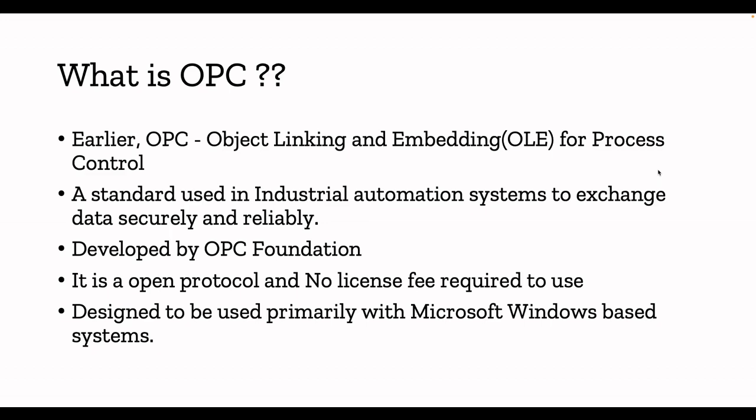Before we talk about OPC UA, we need to understand the history — where this term is coined from. What is OPC? Basically, OPC stands for Object Linking and Embedding for Process Control. All these industrial leaders joined the organization, formed a foundation, and were working to build an interoperable protocol in order to exchange data securely and reliably between all industrial automation systems. OPC ensures seamless flow of data between multiple vendor systems — that is the main objective of OPC.